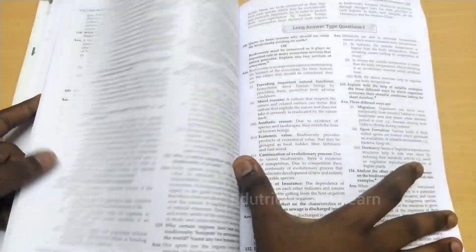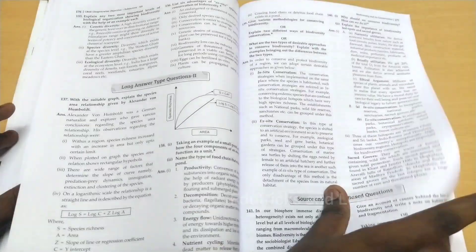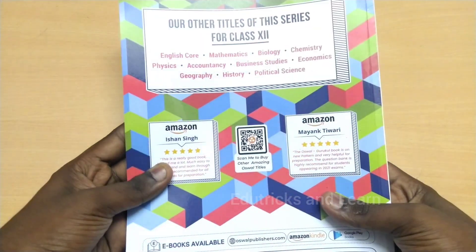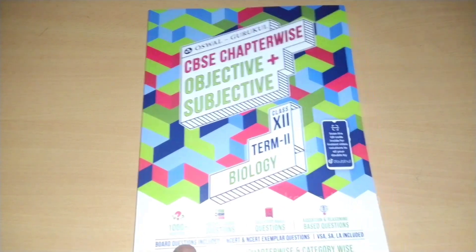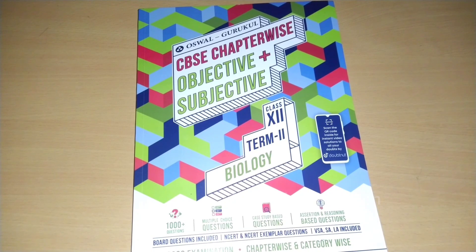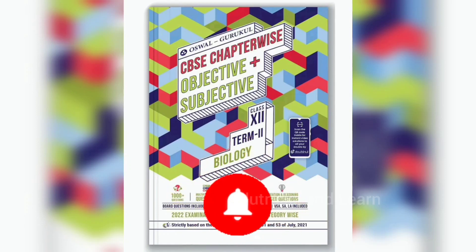Evaluation and analysis based questions are also included, and at last they give self-assessment questions. Only this one chapter covers nearly 210 questions. If we buy this book, we can practice more questions. The link to buy is in the description box; you can also buy on Amazon or Flipkart. If you have not yet subscribed, please click the Subscribe button and press the Bell icon. Thank you so much, have a nice day, be safe.